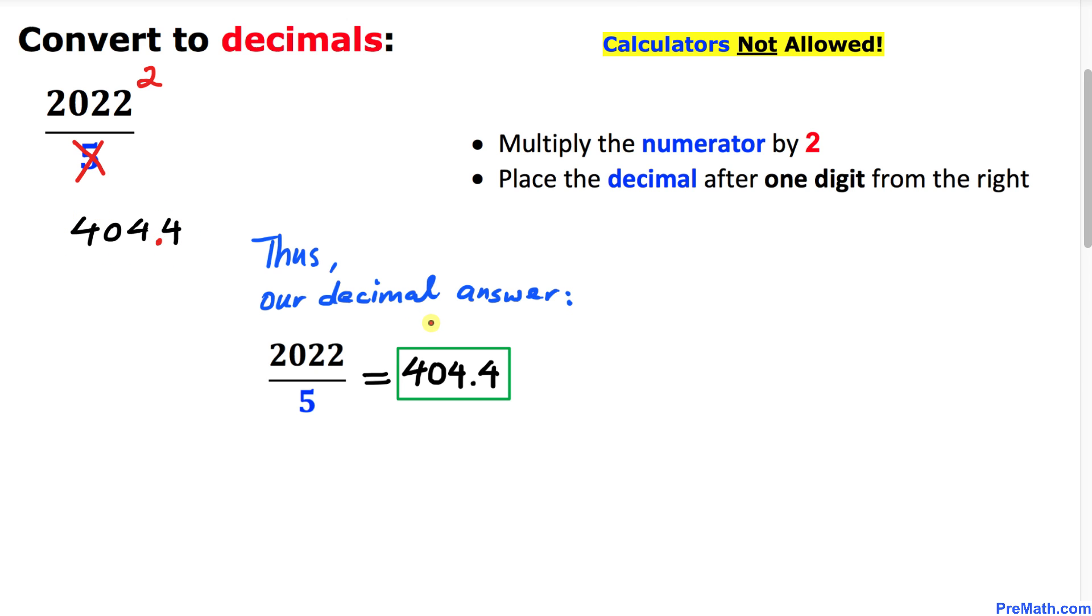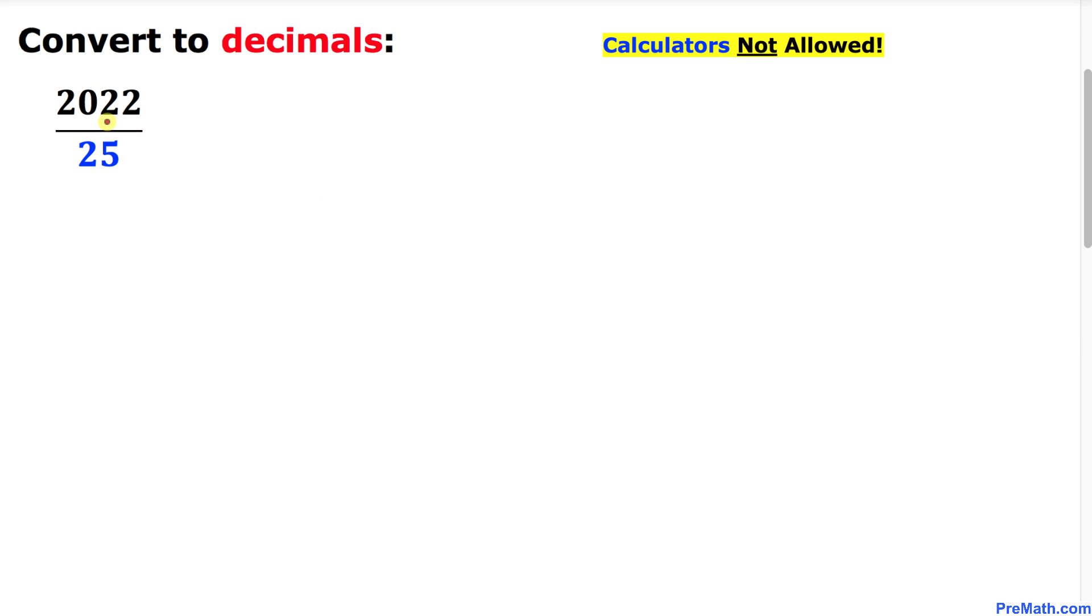Thus our decimal answer turns out to be 404.4. Here's our next example: 2022 divided by 25. Whenever we are dividing by 25, do not divide by 25. Instead, multiply this numerator by 4.